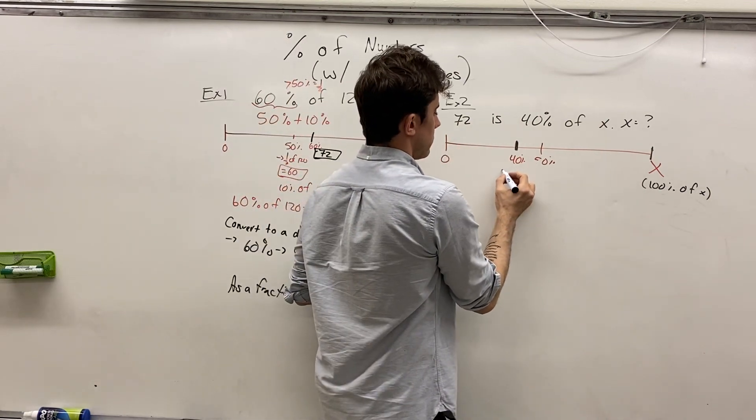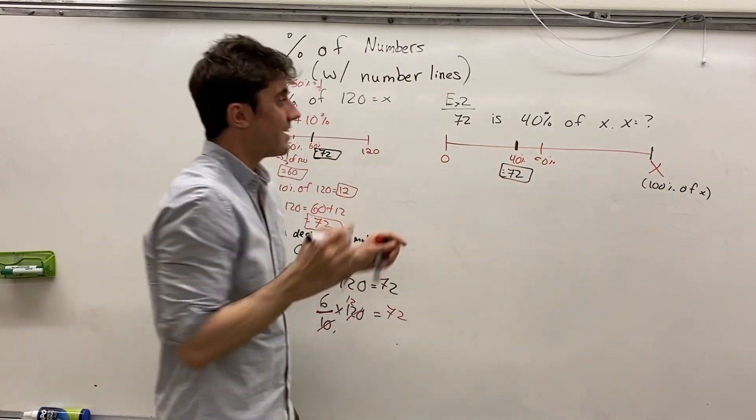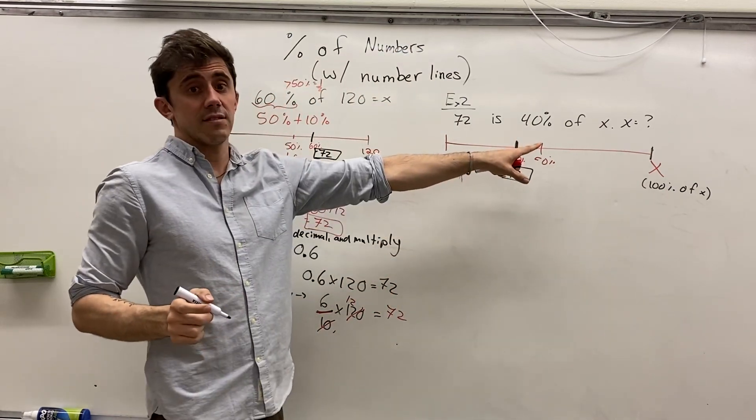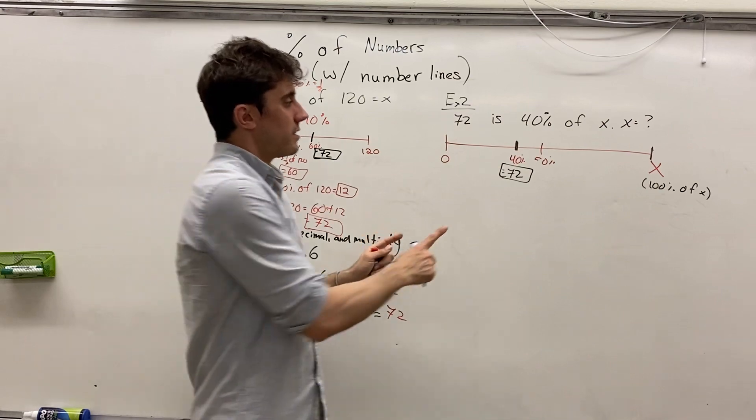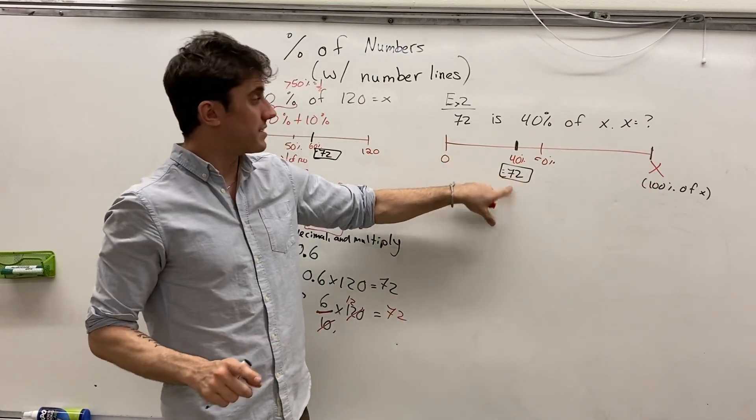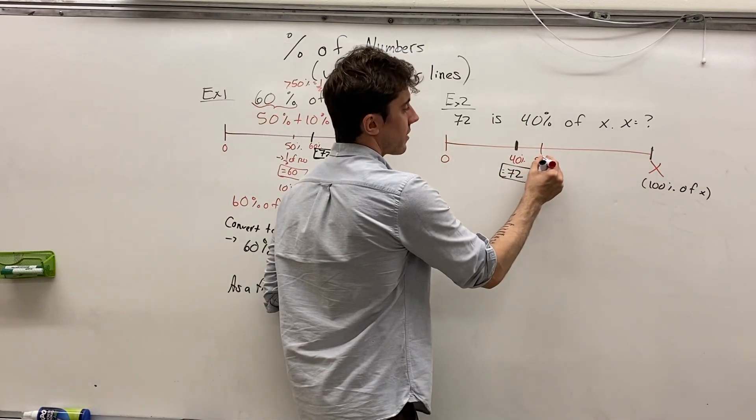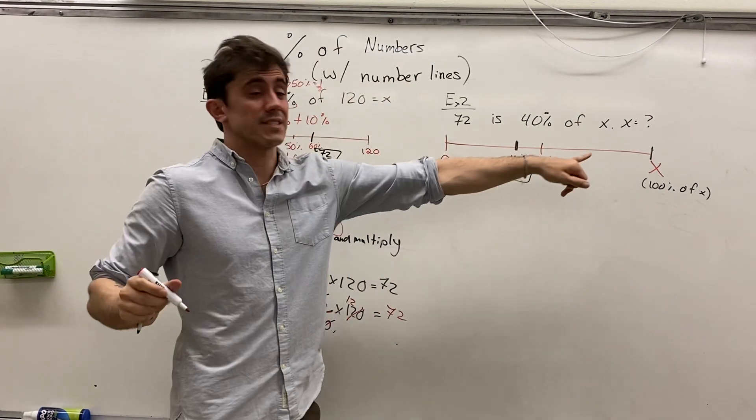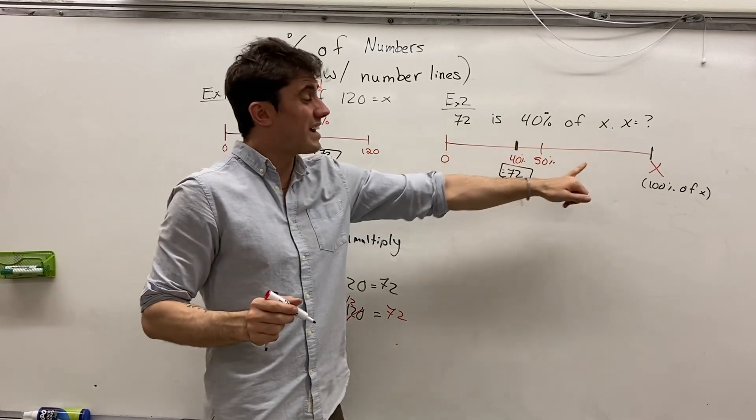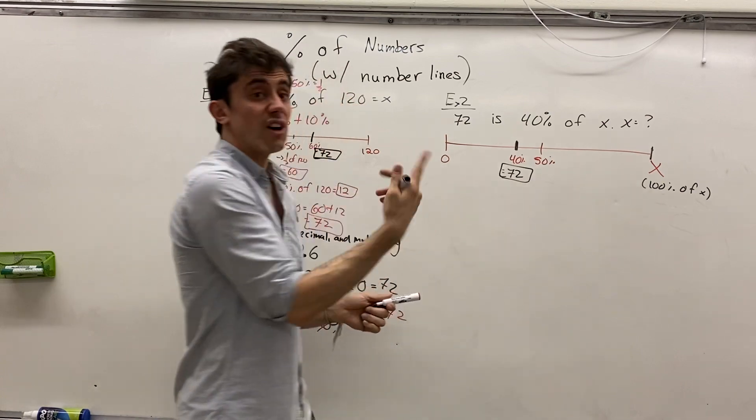And so now we know that 40% of x is in fact 72. Right here we have 72. And that's less than half. So that means that the full x is going to be more than double. Because 72 is not even 50%. It's not even halfway there. It's not even 50% of x.